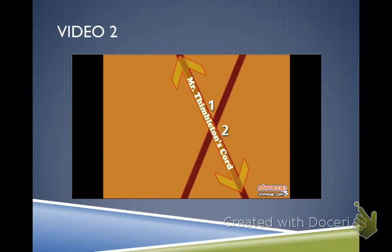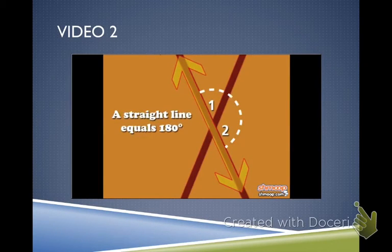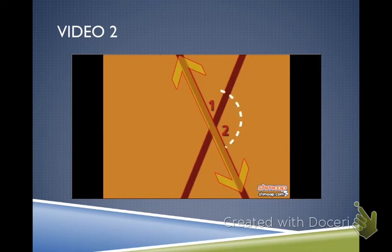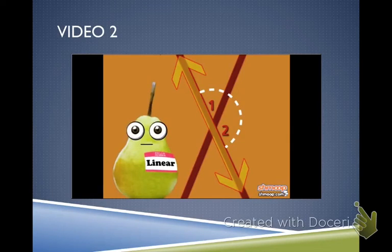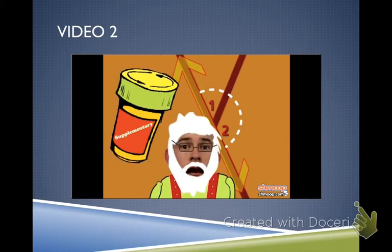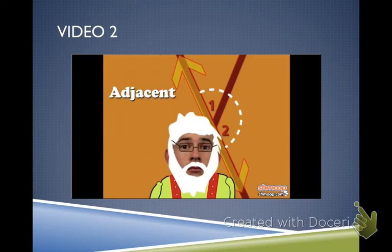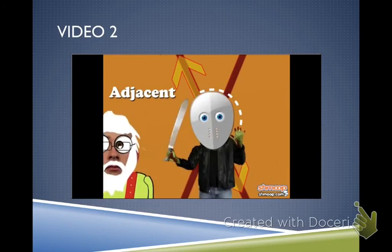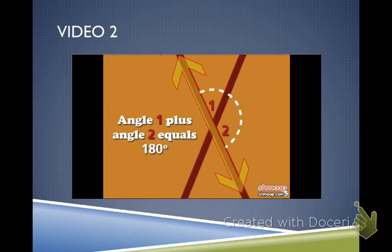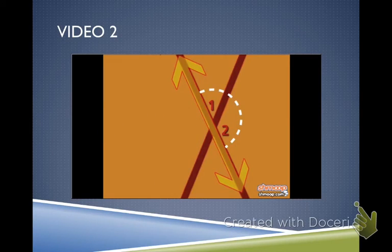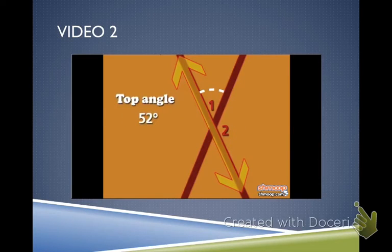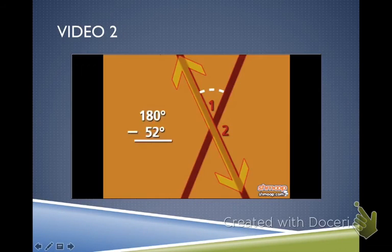To start, let's look at Mr. Thimbleton's bungee cord. Since it's a straight line, we know it makes a 180-degree angle. That means our top angle plus this angle on the side make a linear pair. Two angles that are supplementary and adjacent. Since they're supplementary, we know they add up to 180 degrees. And because we know the top angle is 52 degrees, we can find the side angle by subtracting. That's 180 minus 52. And the angle on the side is 128 degrees.